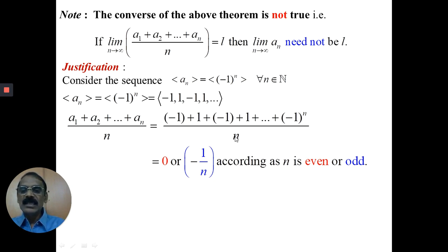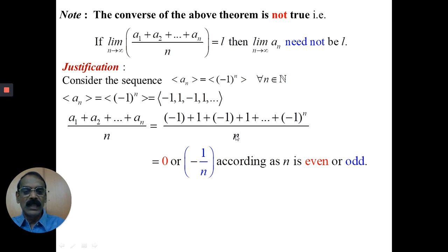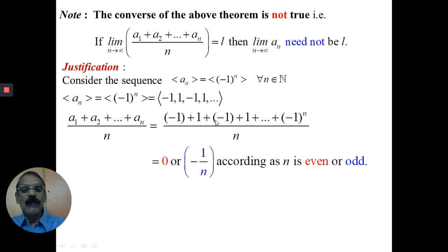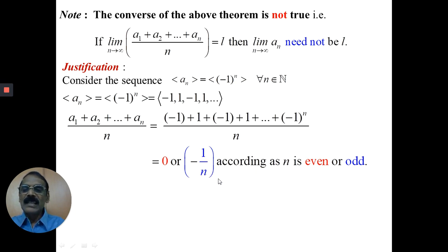Consider three terms: (a1 + a2 + a3)/n, that is, (-1 + 1 + (-1))/3. Minus 1 plus 1 cancel, giving -1/3. If we consider three terms we get -1/3; five terms gives -1/5; seven terms gives -1/7. Therefore, if n is odd, the sum will be -1/n.